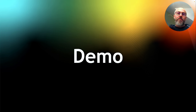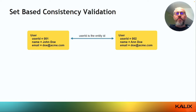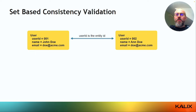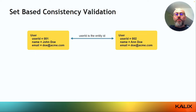I will use the same use case I implemented for choreography sagas. Let's recap in case you haven't seen that other webinar. In an event-sourced system, there is one major challenge: how can I have unique fields inside my model that are unique across all entities for that specific model? This problem is called set-based consistency validation.